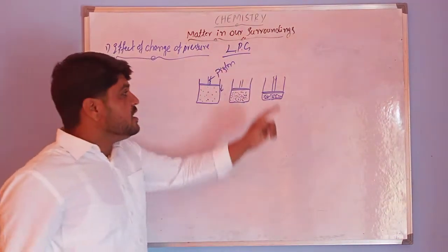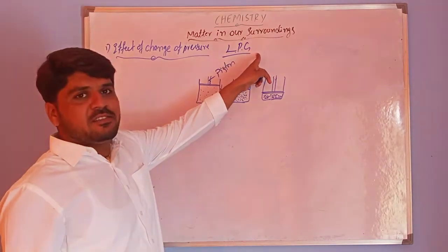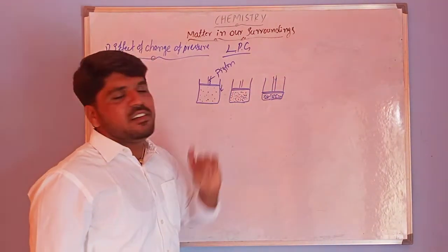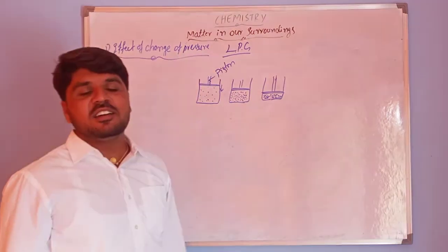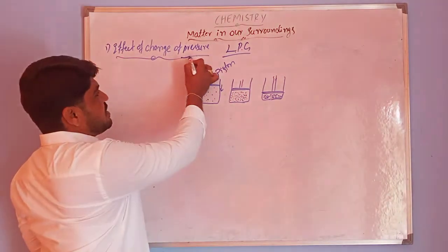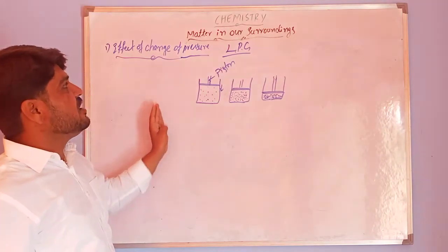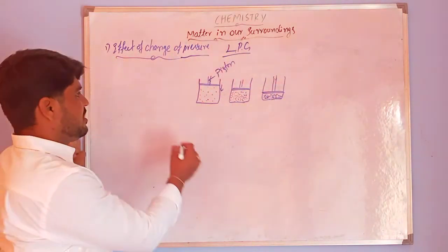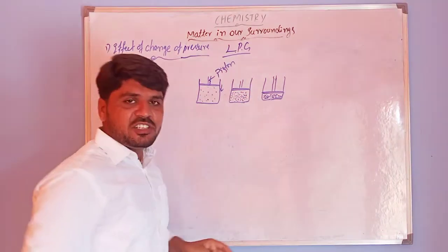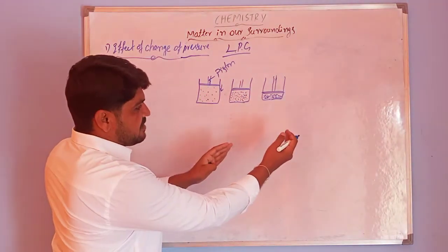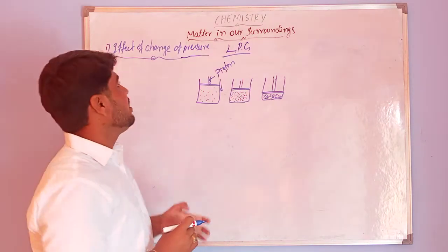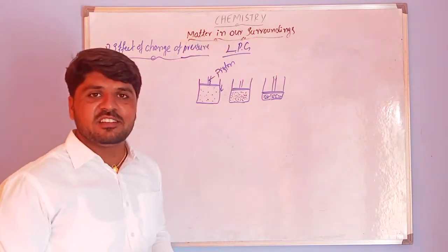That is how gas particles change into liquid state under high pressure. For example, LPG — liquefied petroleum gas — is made this way: from gases we can obtain liquids by applying pressure. So by pressure and temperature we can change the different states of matter: solid into liquid is fusion, liquid into gas is evaporation, gas into liquid is liquefaction, and liquid into solid is solidification.